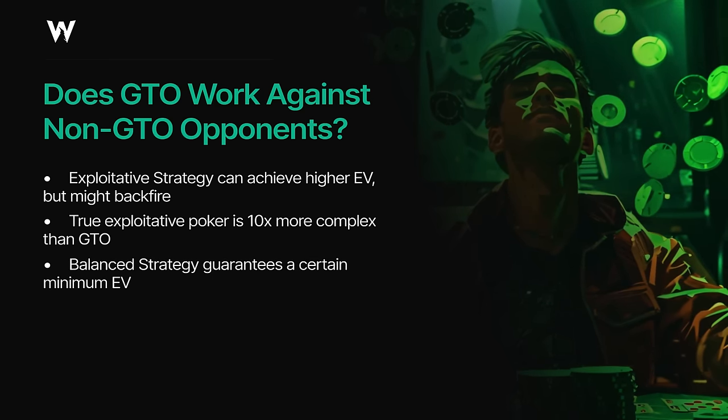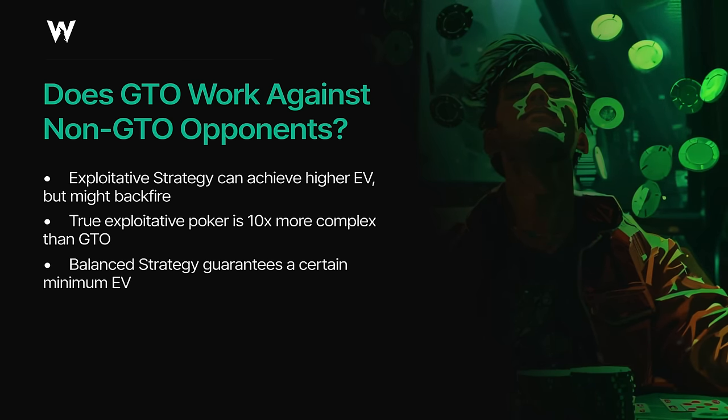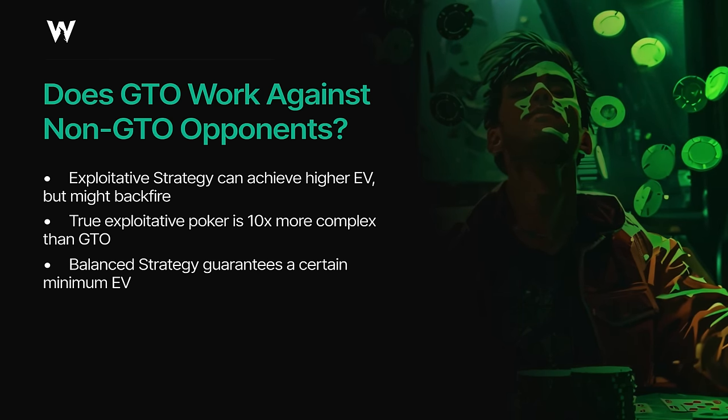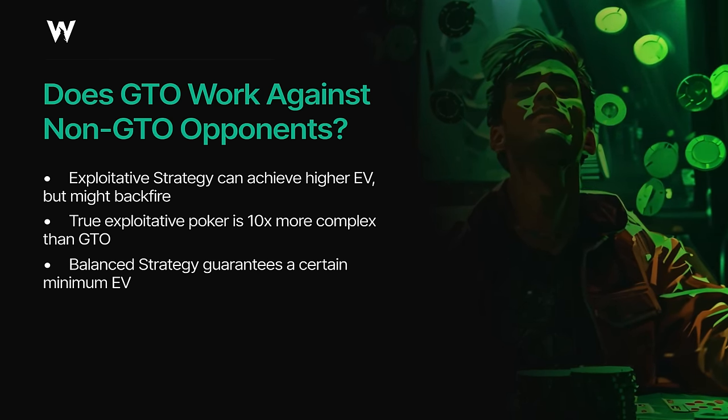This is where the draw of a balanced strategy comes into play. You don't need any reads with a balanced GTO strategy — you just need to try and play approximate GTO. This carries a certain minimum EV guarantee: regardless of how your opponents are playing, you're guaranteed to make at least this much, if not more. One of the most alluring aspects of GTO is that if you're playing it, you'll win at least this much money in the long run. The best your opponents can do is play GTO themselves and give you your minimum EV. But if they're not playing GTO — and no one actually is — they're making mistakes and your expected value increases.